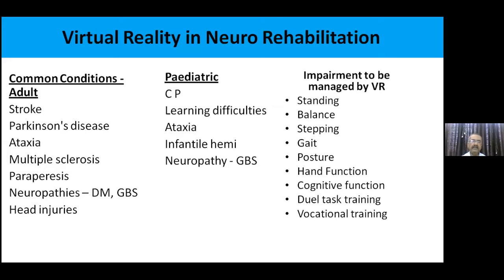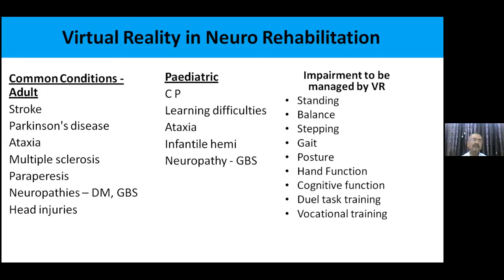Virtual reality can be applied to common neurological conditions such as stroke, Parkinson's, ataxia, multiple sclerosis, and paraparesis. You can train patients who are not able to stand or balance, improve hand function, community function, and dual-tasking training. You create a virtual world and the patient is trained for any of these impairments using different types of gadgets or attachments.